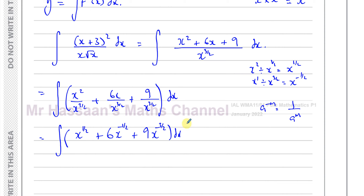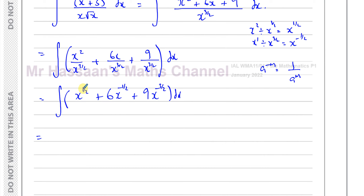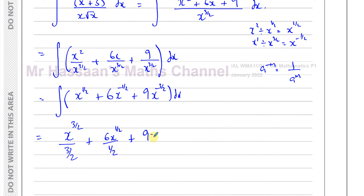Now it's ready to integrate. Everything is in terms of indices, all terms are in the numerator, and brackets have been expanded into separate terms. To integrate, I add 1 to the power and divide by the new power. A half plus 1 is 3 over 2, so this gives x to the power of 3 over 2 divided by 3 over 2. Plus 6x: add 1 to negative a half gives a half, divide by a half. Plus 9x: add 1 to negative 3 over 2 gives negative a half, divide by negative a half. Don't forget the constant of integration — very, very important in this question.